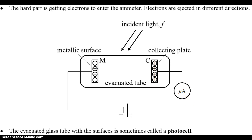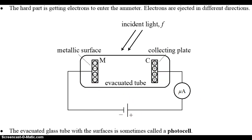Next, we're going to measure, with a different apparatus, the maximum kinetic energy of the electrons when they are ejected from the surface. It's almost the exact same setup. The primary difference is that instead of having the negative terminal connected to the metal surface and the positive to the collecting plate, we're going to put the negative terminal of the battery to the collecting plate.